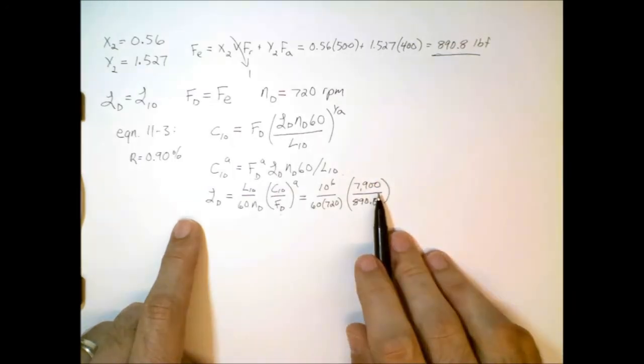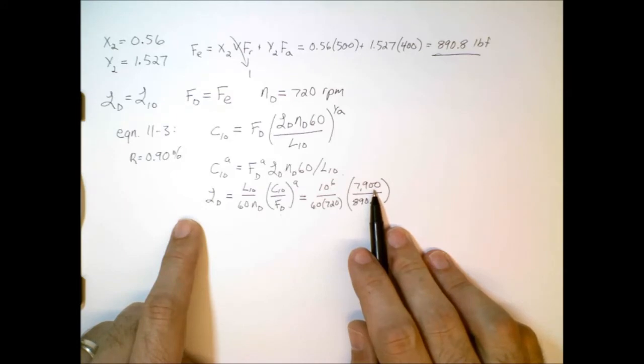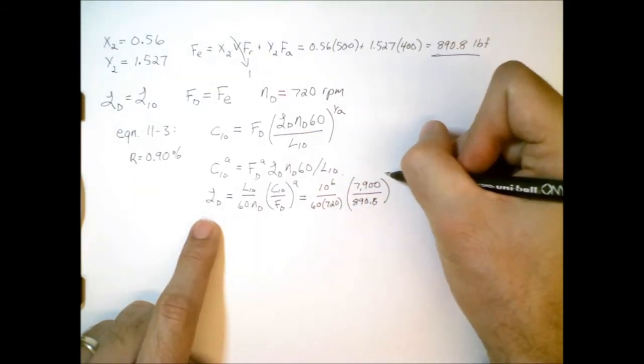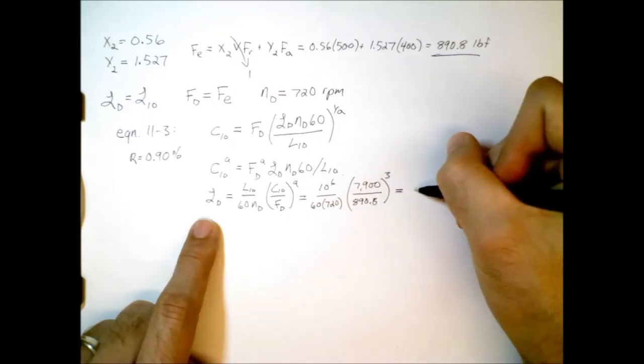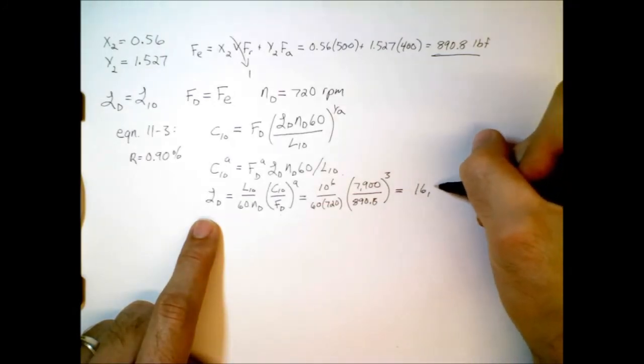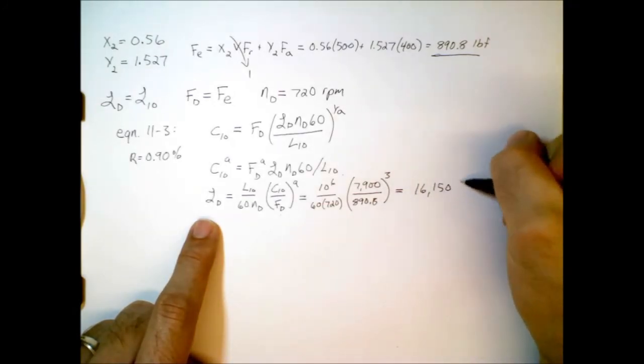Now, we put the numbers in and see what happens. Now, remember, we already know what the basic static load rating is. This is an analysis problem. We have a given bearing, we know the system specifications, and we're trying to get a performance prediction. In this case, we want to predict what the design life in hours is. So, of course, we have to raise to the power of A. And if we calculate that out, it's 16,150 hours.